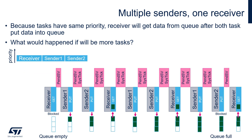Before we go to the code, let's discuss what we would like to have within our application. Because both tasks — sender one, sender two, and receiver — have the same priority, receiver will get data from the queue after both tasks put data into it. So we can monitor what would happen if the queue becomes full and what the side effects would be.